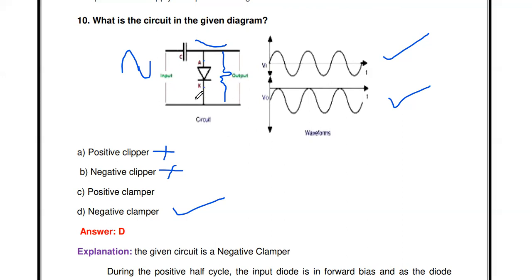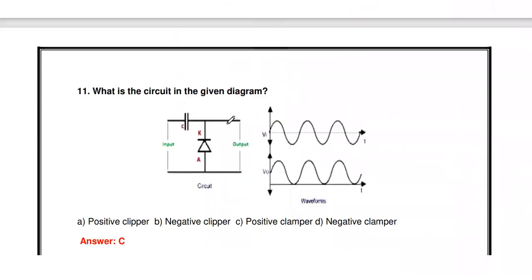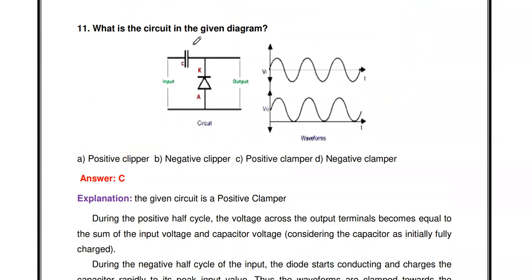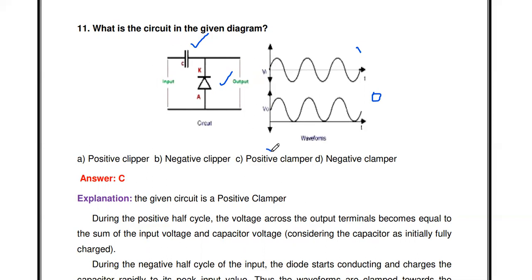Next question: What is the circuit in the given diagram? Here, the capacitor and diode are present, and based on the diode position — cathode up, anode down — this is a positive clamper. A positive clamper shifts the entire AC waveform upward; a positive DC voltage is inserted. The entire waveform is shifted above the reference voltage. The answer is positive clamper.